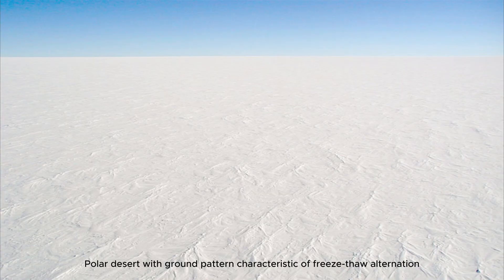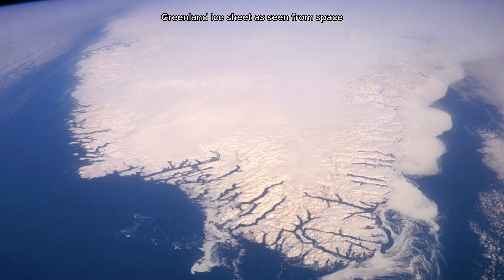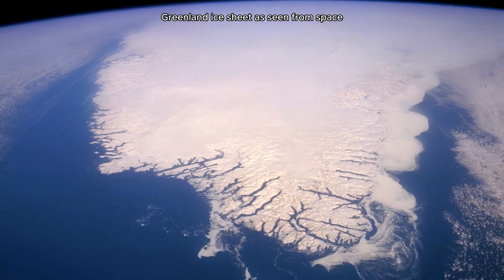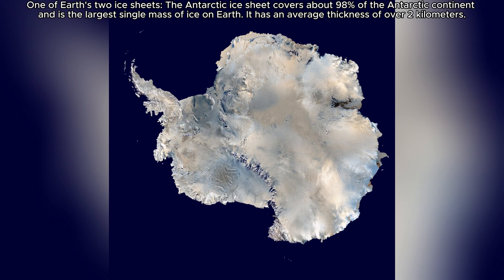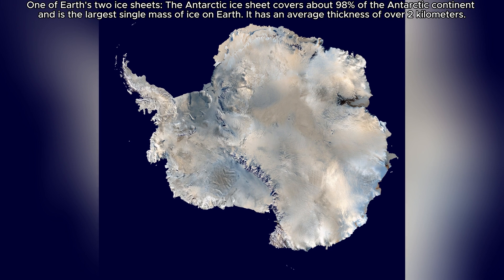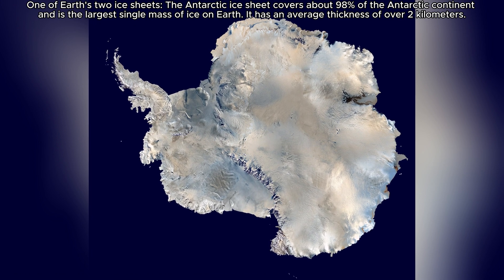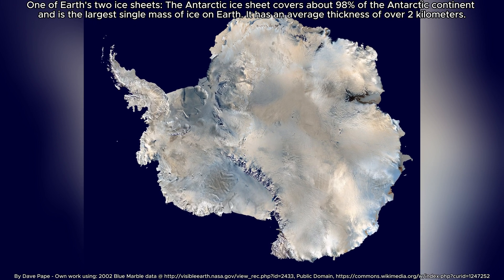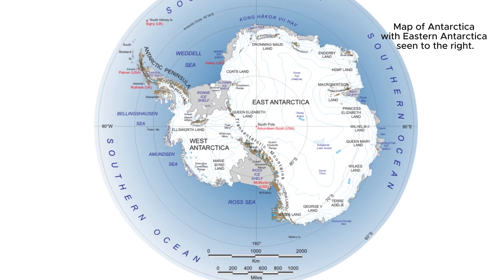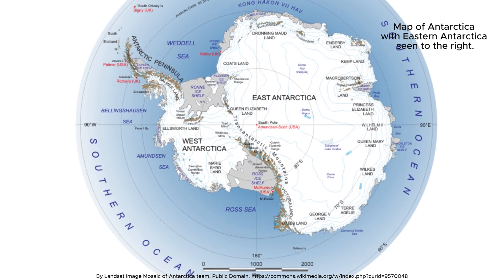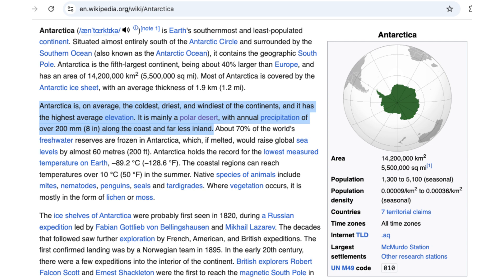Polar deserts provide yet another perspective on desert formation. Located in the Arctic or Antarctic regions, these deserts are extremely cold, with their dryness stemming from the air's inability to hold moisture at such low temperatures. While we may think of deserts as hot, polar regions meet the technical criteria for deserts.